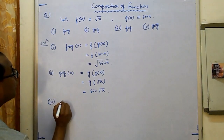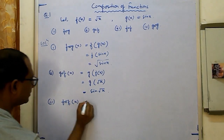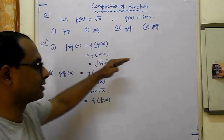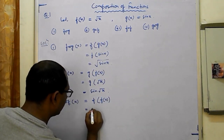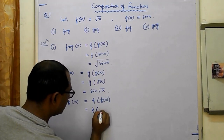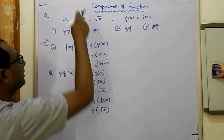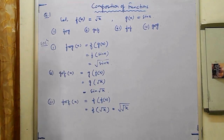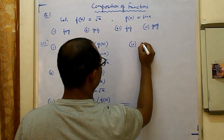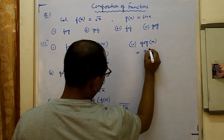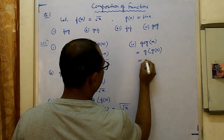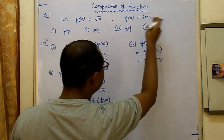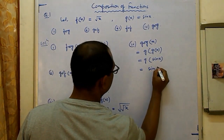For f∘f: f of f(x) — both functions are f. First f(x) = √x, then √x undergoes f again to get √(√x), which is the fourth root of x. For g∘g: g(x) = sin x, and sin x undergoes g again to give sin(sin x). So g of g(x) = sin(sin x).